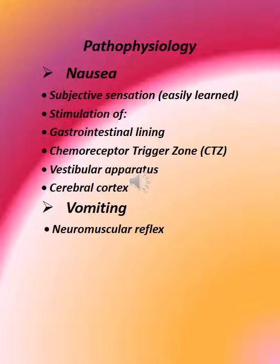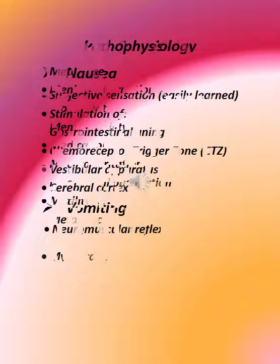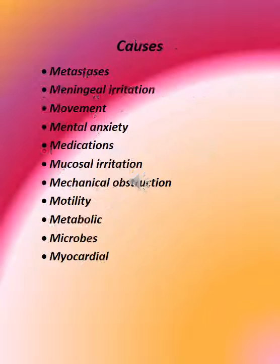Pathophysiology: Nausea is a subjective sensation. Stimulation occurs via the gastrointestinal lining, chemoreceptor trigger zone (CTZ), vestibular apparatus, and cerebral cortex. Vomiting is a neuromuscular reflex.